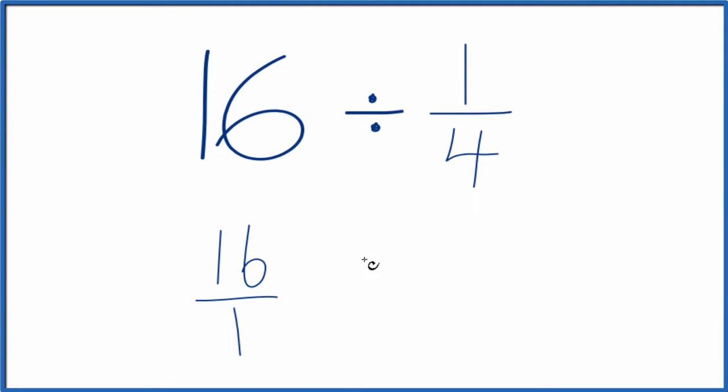Next, instead of division, let's multiply by the reciprocal of 1 fourth. To take the reciprocal for a fraction, you move the numerator down and the denominator up. So we end up with 4 over 1. That's the reciprocal for 1 fourth.